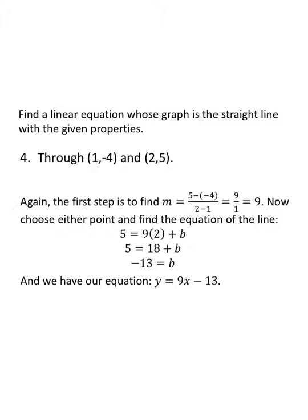Last example: through points (1, -4) and (2, 5). First find the slope: five minus negative four over two minus one. Five plus four is nine; nine over one is nine. Slope is nine. Choose the point with no negatives: use (2, 5). Five equals nine times two plus b. Nine times two is eighteen; five equals eighteen plus b. Subtract eighteen from both sides: b equals negative thirteen. The equation is y equals nine x minus thirteen.